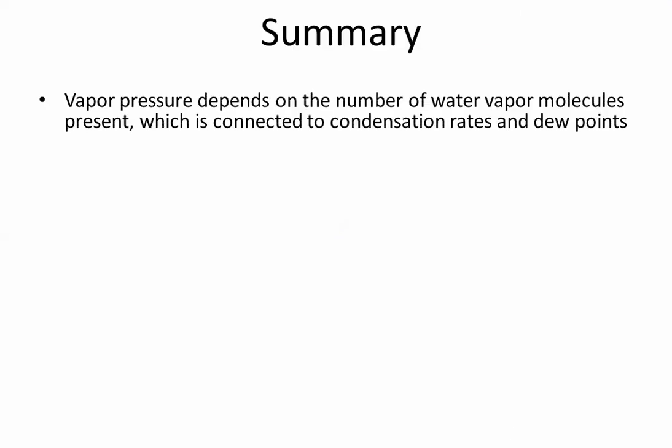So let's wrap this up with a few key ideas that I want you to be able to tie together. First, vapor pressure depends on the number of water vapor molecules present. And that is connected to condensation rates and dew points. Dew point is the meteorological variable that we measure that is tied to the ideas of vapor pressure and condensation rates.